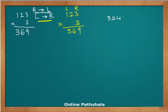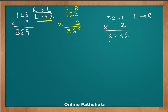Let's look at one more example: 3241 multiplied by 2. We'll use a simple example with no carry digits. Using the left-to-right method: two times three is six, two times two is four, two times four is eight, and two times one is two. So the answer is 6482.